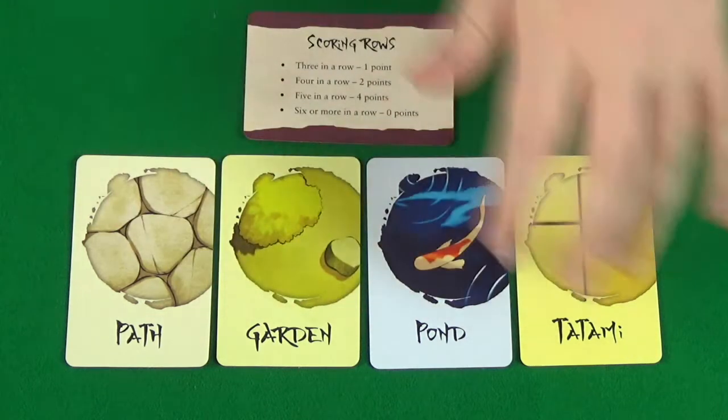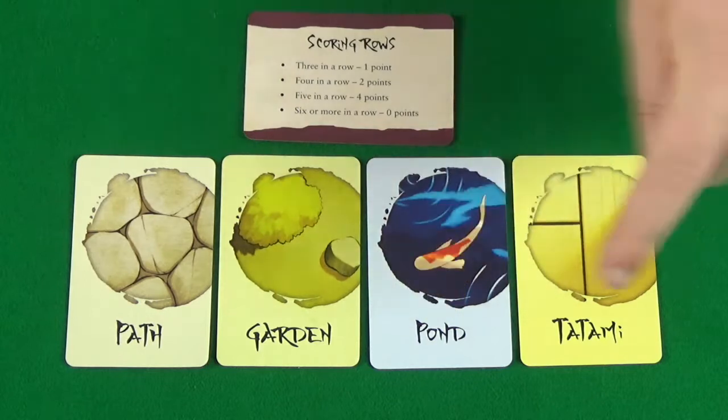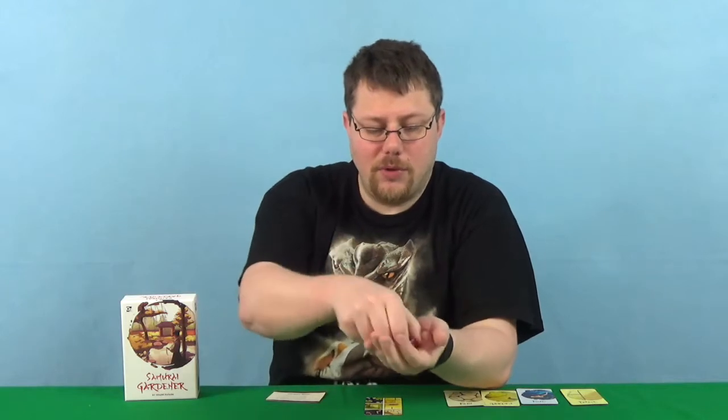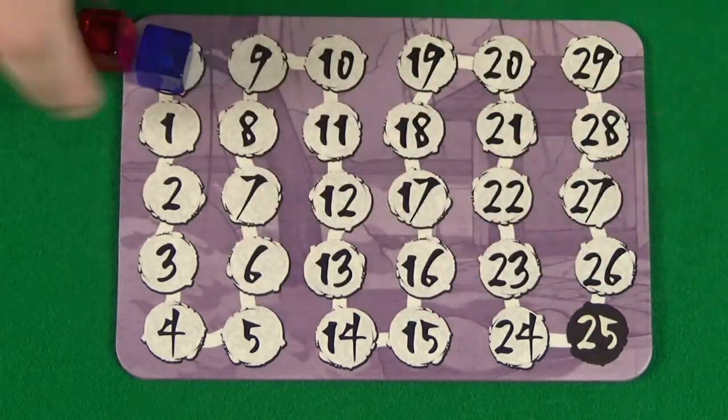Each player will also need a scoring aid and a set of four of the feature cards: path, garden, pond, and tatami, which will sit face up on the table in front of them. The final thing they need to do is pick a color to be for a scoring marker. So, I'll take blue, my opponent red, and places it on the zero space. That's the game set up and you're ready to begin.